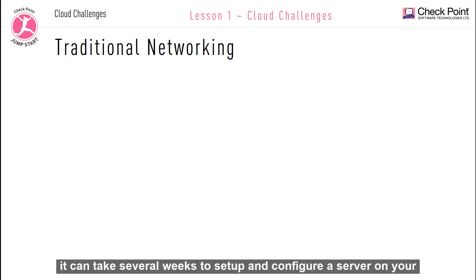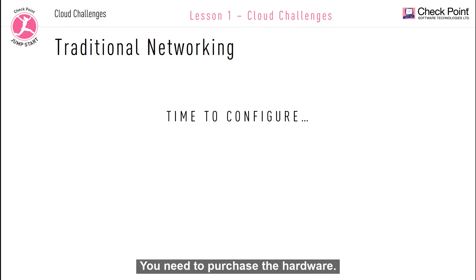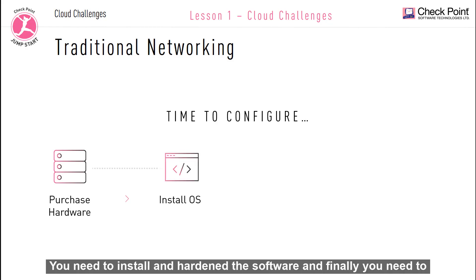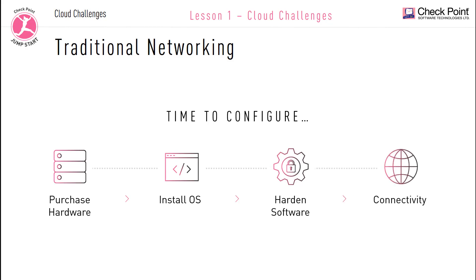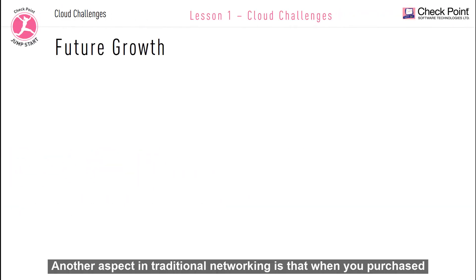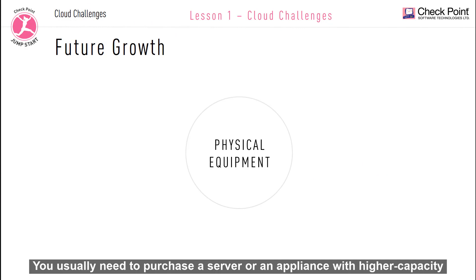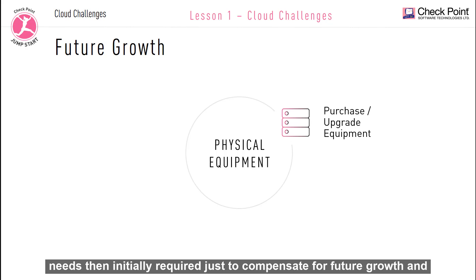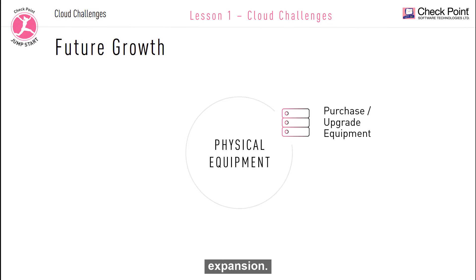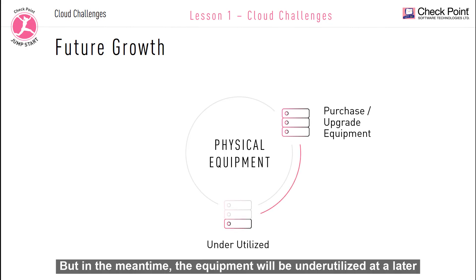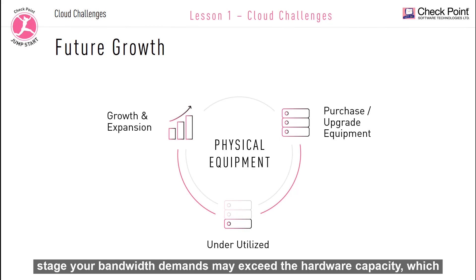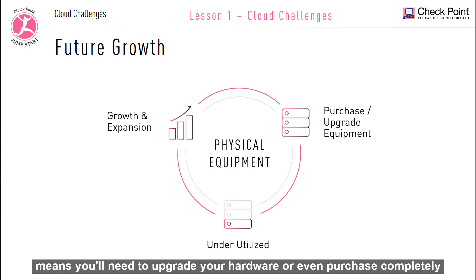In traditional networks, it can take several weeks to set up and configure a server on your network. You need to purchase the hardware, install the operating system, install and harden the software, and finally configure and connect it to the network. Another aspect of traditional networking is that when you purchase physical equipment, you always need to project for future growth. You usually need to purchase a server or appliance with higher capacity than initially required, just to compensate for future growth and expansion. In the meantime, the equipment will be underutilized. At a later stage, your bandwidth demands may exceed the hardware capacity, which means you'll need to upgrade your hardware or even purchase completely new hardware.